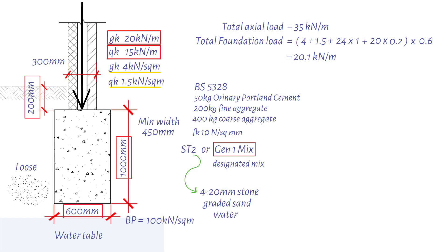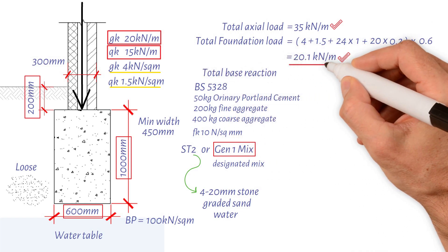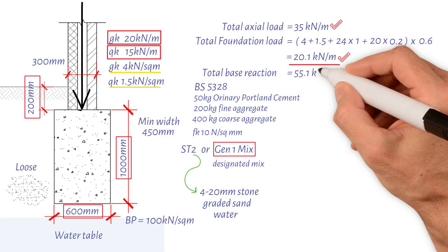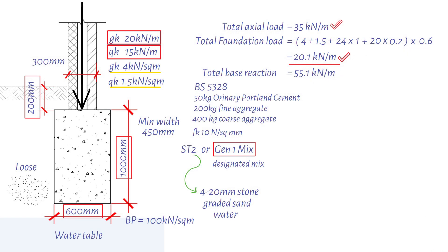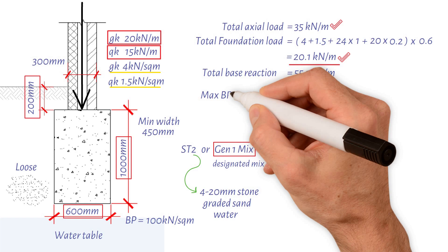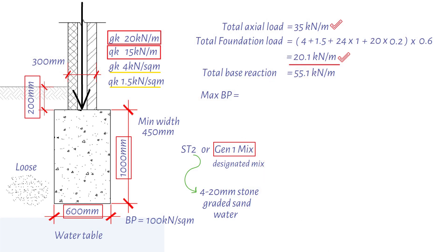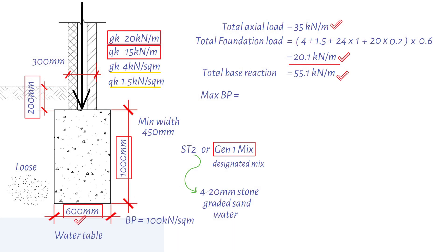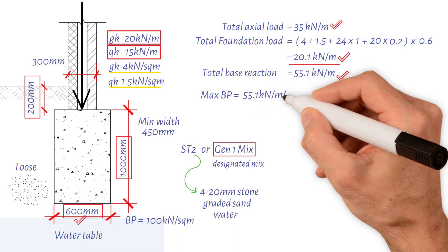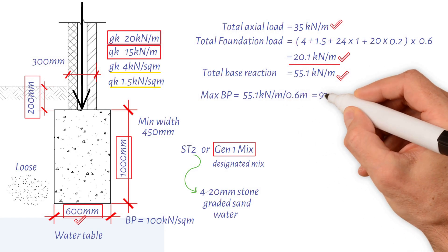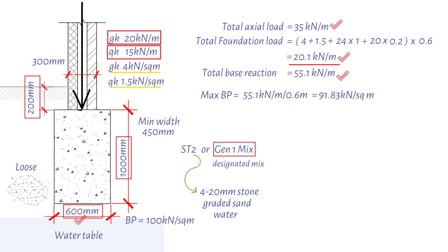Therefore, the total base reaction equals 35 kilonewtons per meter plus 20.1 kilonewtons per meter, which is equal to 55.1 kilonewtons per meter. Therefore, maximum base pressure equals total base reaction (55.1 kilonewtons per meter) divided by the foundation width (0.6 meters). This results in a value of 91.83 kilonewtons per square meter. So, the maximum base pressure is less than allowable bearing pressure.